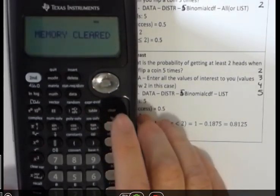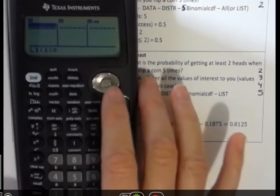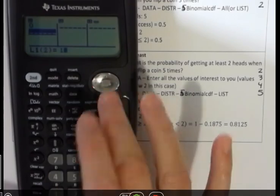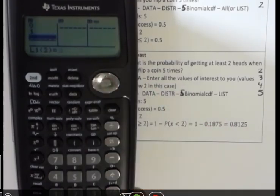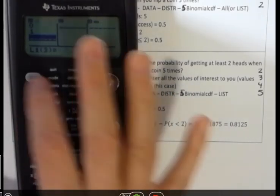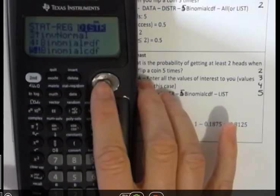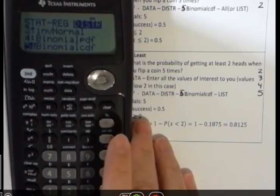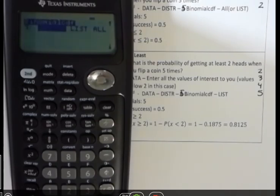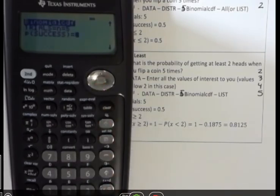So we're going to enter into data the values that are of interest to us, and that's the ones below two. So on clear, and I'm going to hit data and enter zero and one. And then second function data distribution down to number five, because I'm going to sum up zero and one here. Hit enter. I want a list because I said what values I had. There was five trials, 0.5.